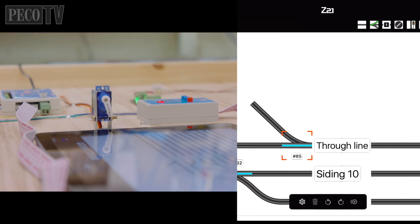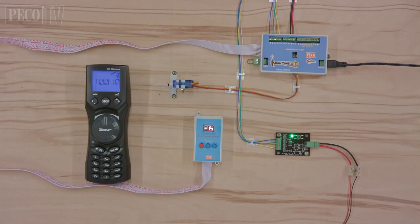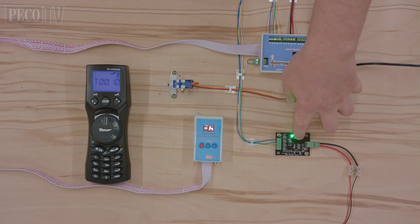The smart switch is then ready for use under DCC control. If you're using a traditional style controller, the process is the same.